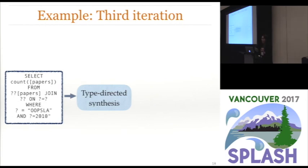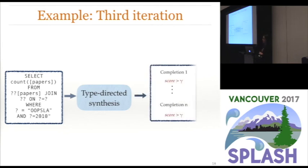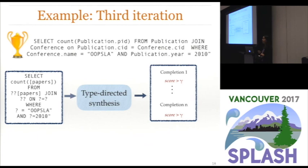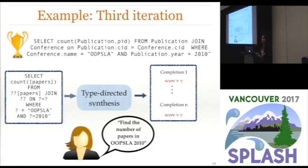In the third and final iteration, when we go back to synthesis, we can actually find completions that meet our confidence threshold. The query that's highest ranked is the correct one — if you run it on the MAS database, it gives you the answer you want.